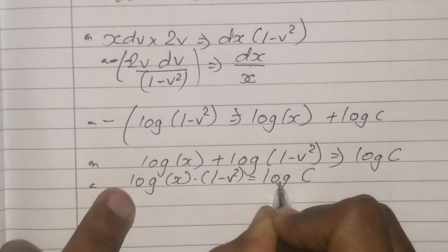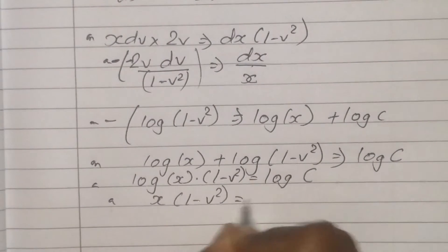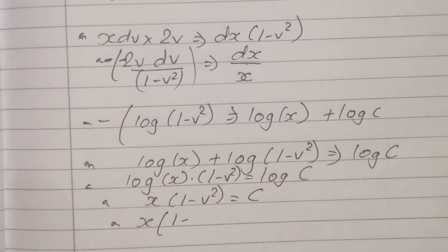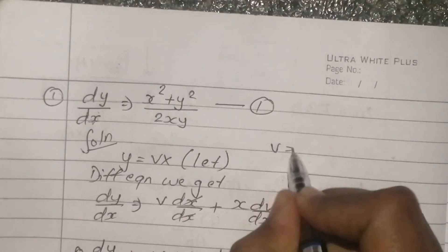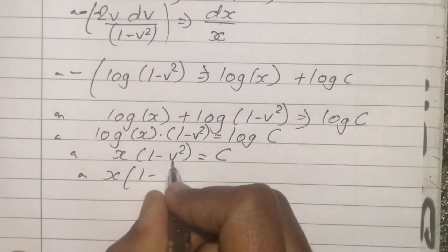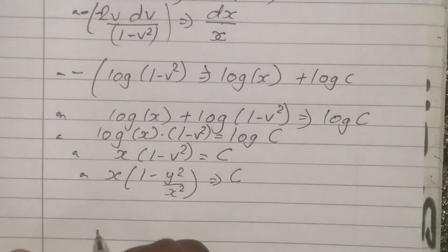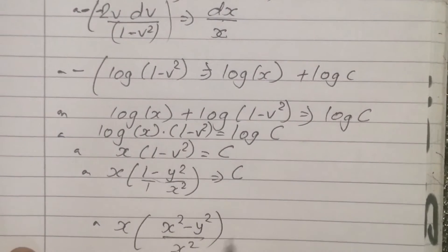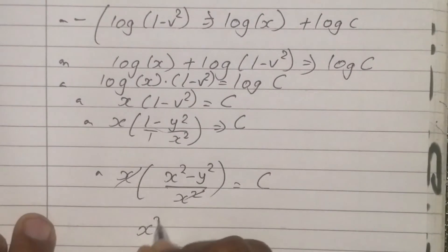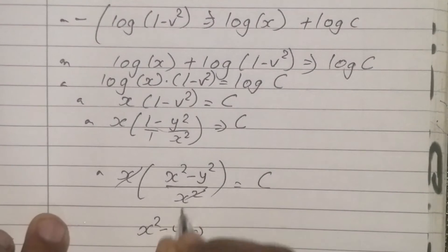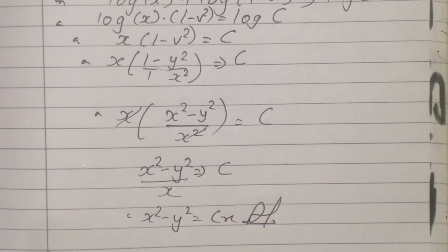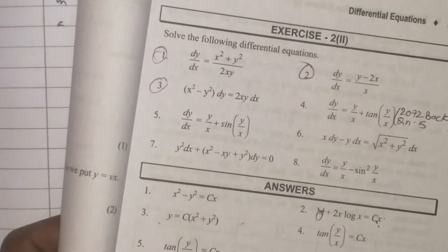Therefore, 1 minus v² is equal to cx. Substituting back v = y/x: 1 minus y²/x² equals cx, which gives x² minus y² is equal to cx. This is the solution to Question 1.